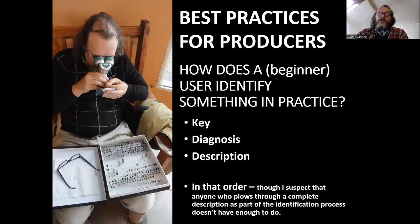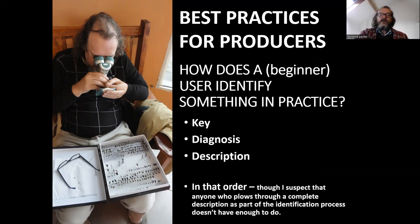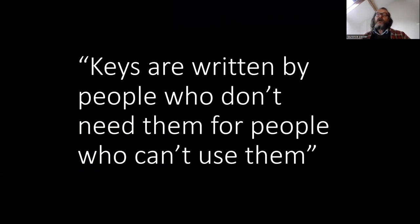Now let's look at the other side: what are best practices for people producing identification guides, i.e. taxonomists? How does a beginner identify something in practice? Well, they will use a key. Sometimes they will go from the key to a diagnosis, and if they've got more time than most people have, they'll go from the diagnosis to the description. So let's look at these. And this old adage is worth bearing in mind: keys are written by people who don't need them for people who can't use them.